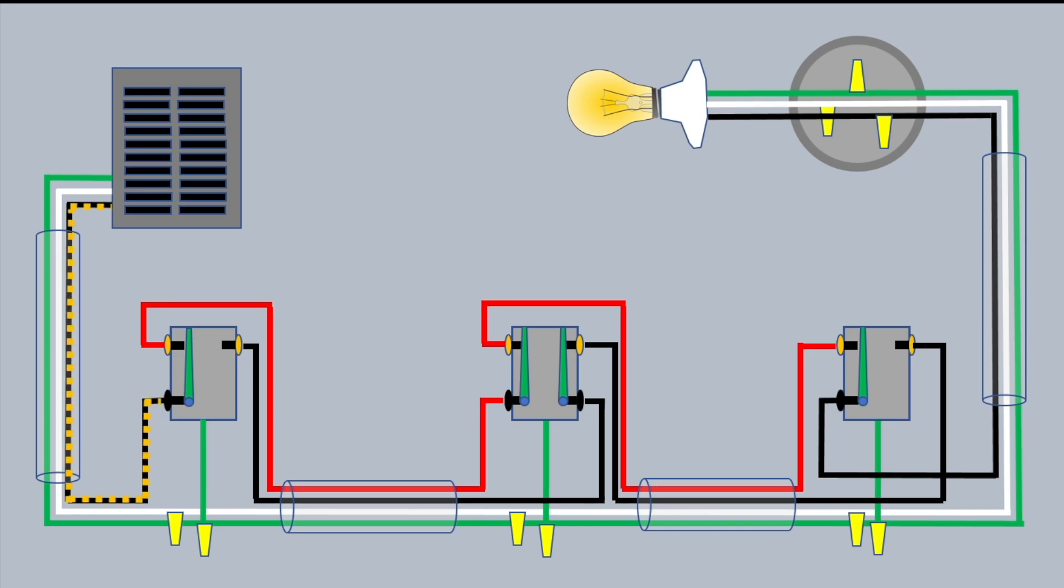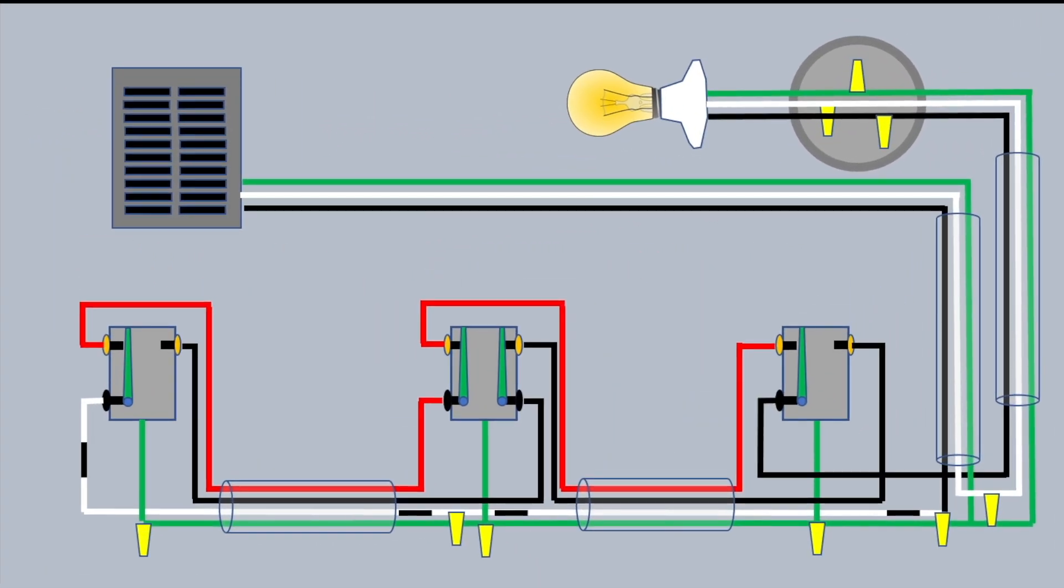The power comes down that black wire, goes into the common terminal of the first three-way switch, then it leaves that switch on the red traveler, and that hooks up to the common wire on the four-way switch. It leaves that switch on the red traveler, goes to the traveler connection on the final three-way switch, and then back out of that switch on the black wire as hot to turn the light on. So this is wiring from the panel to one three-way switch, and from the light to the other three-way switch.